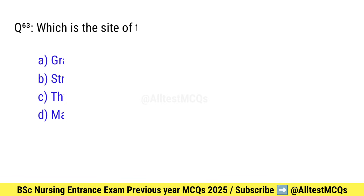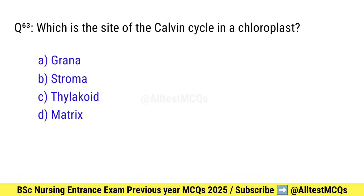Question number 63. Which is the site of the Calvin cycle in a chloroplast? Right option is B: Stroma.